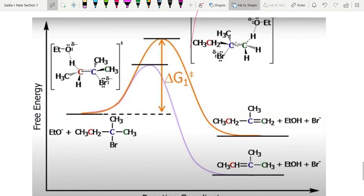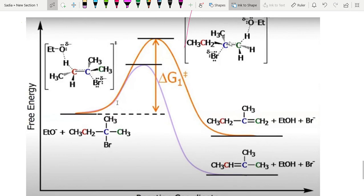Over here we can see that there are two graphs, the orange one and the purple one. When more energy is released, it means it is more stable. So the more stable one is showing us the alkene that is one, two, and three, tri-substituted alkene.